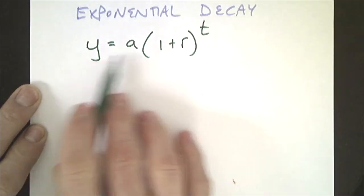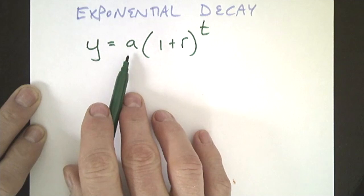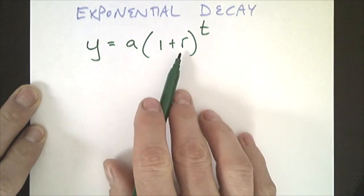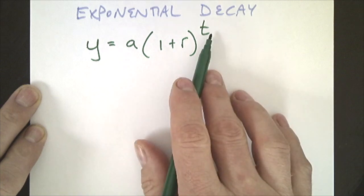This would be the amount in the end, this is the initial amount, and this is the increase or decrease, and this is the time period, however many complete time periods have passed.